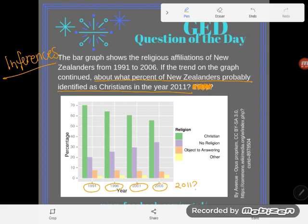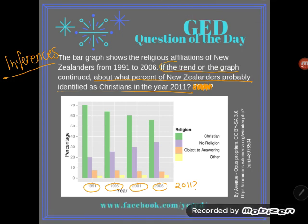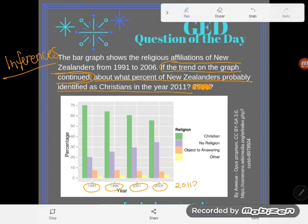We have data for 1991, '96, 2001, and 2006 that we do know, and we can use those to predict what might happen in 2011. We get to assume that whatever trend — whatever patterns are happening on the graph — are going to continue.